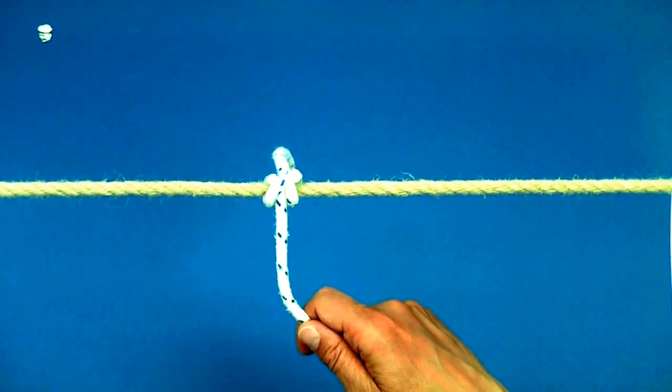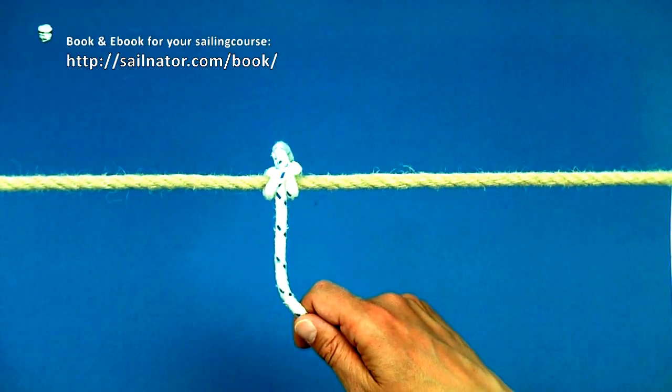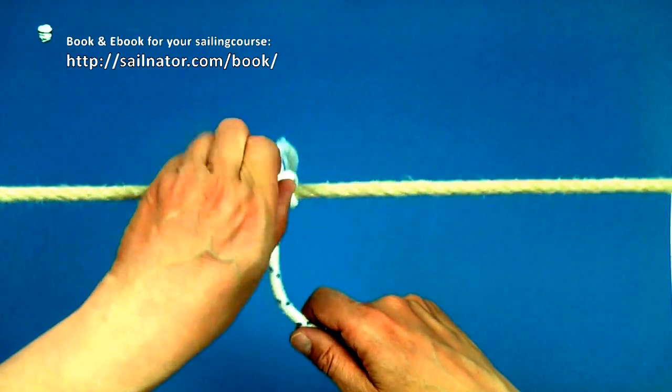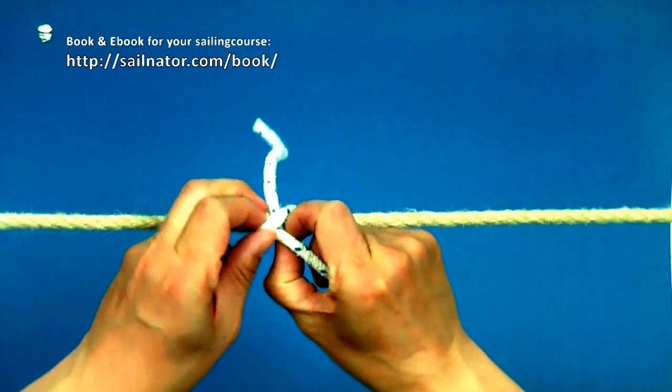In this video I show how to tie the clove hitch. We use the clove hitch for example to attach a fender to the railing.